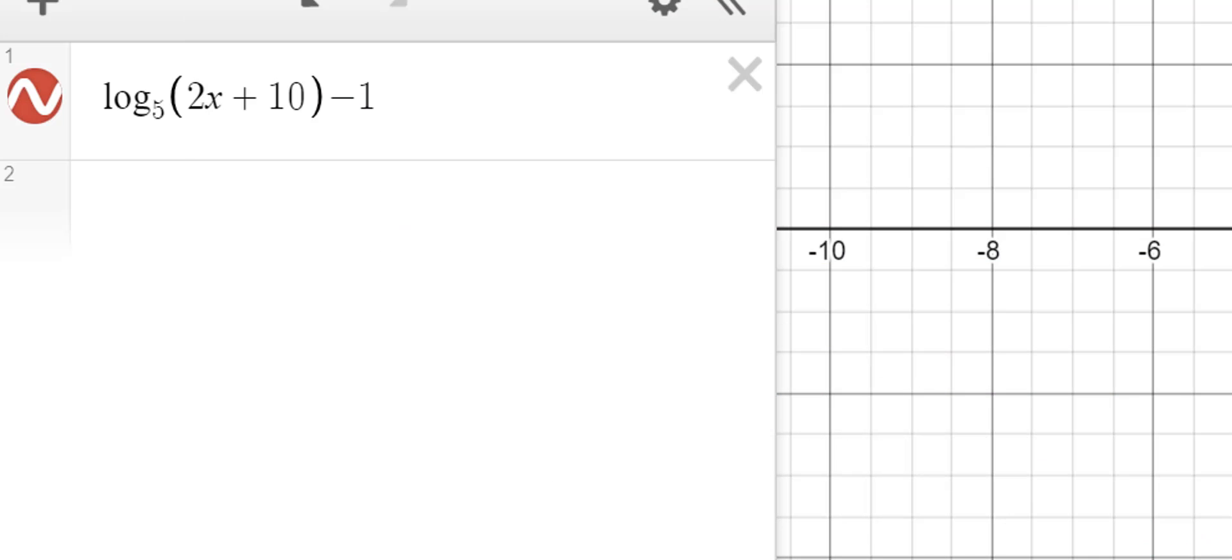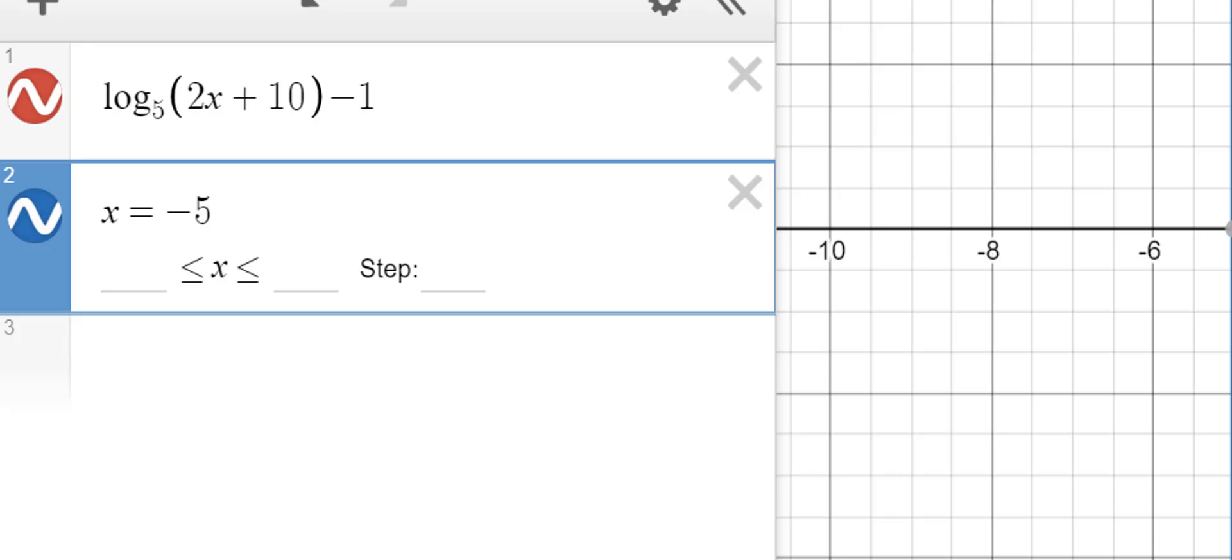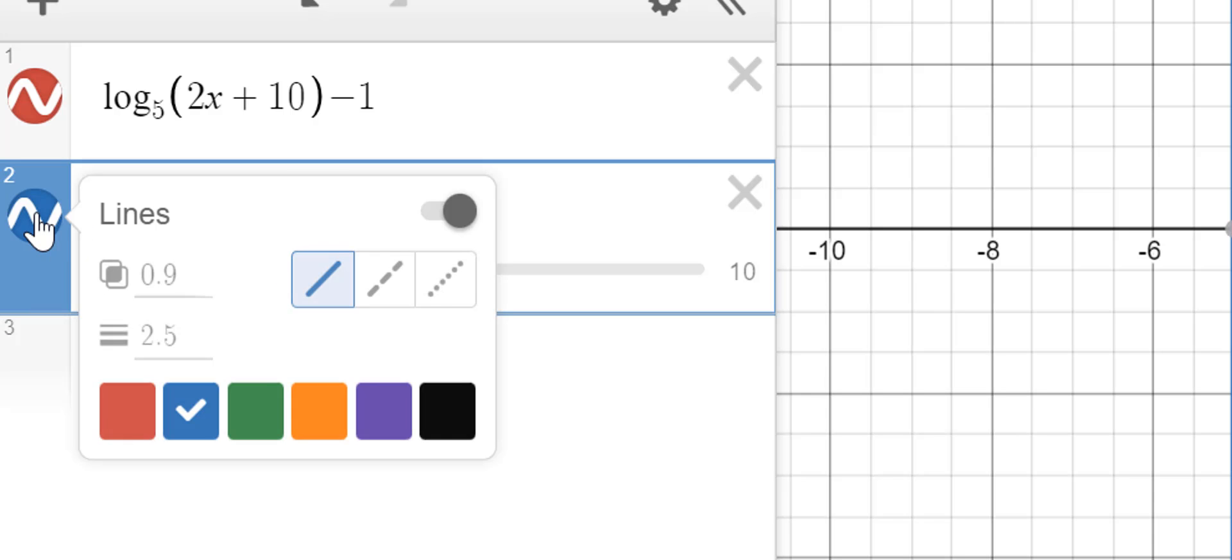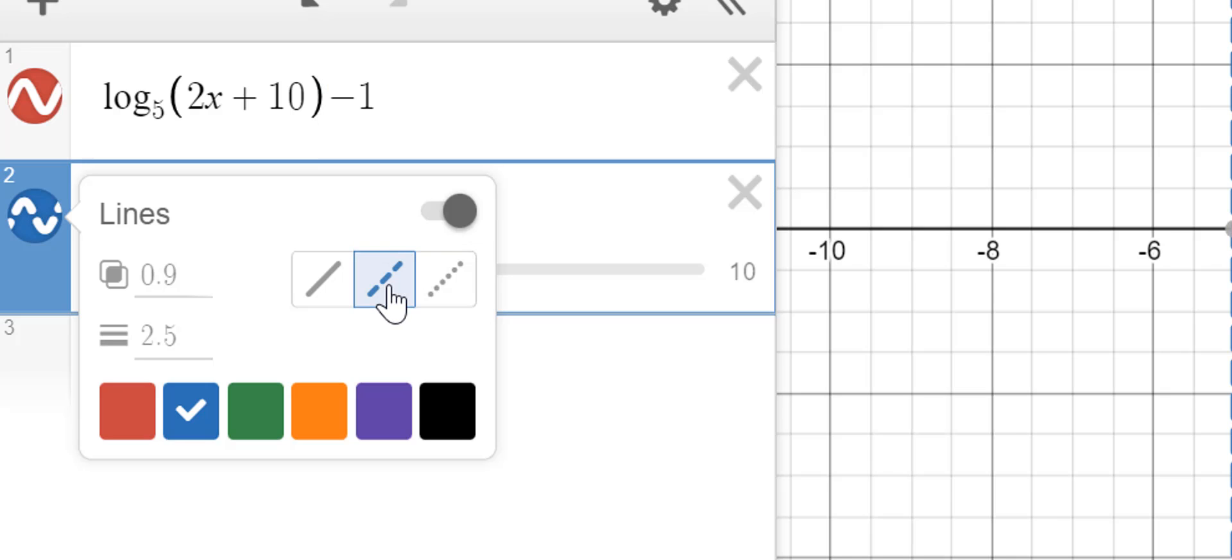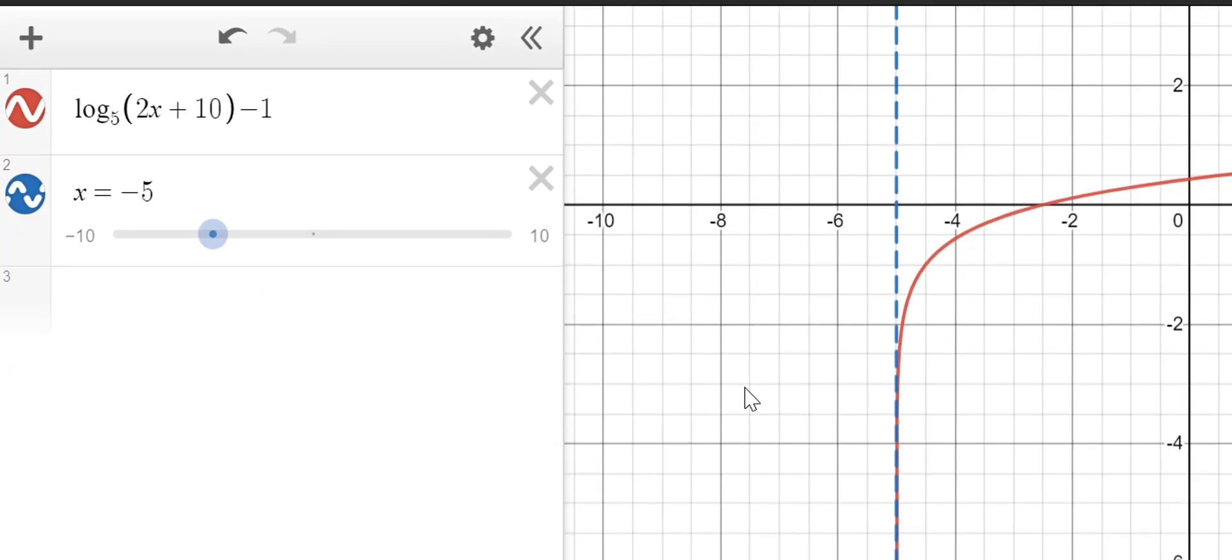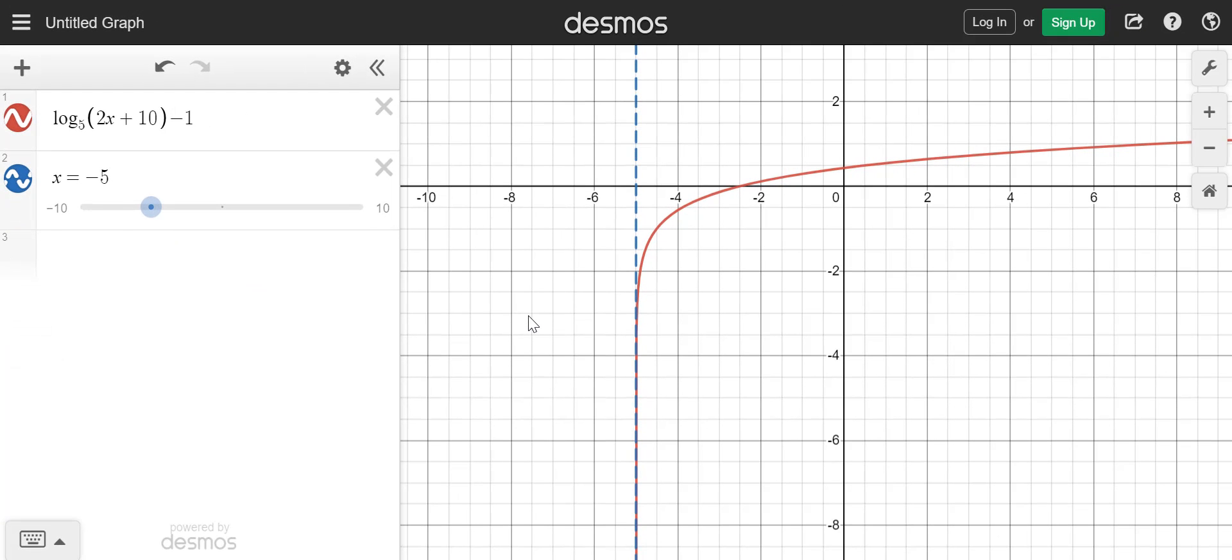So then what we want to do is put in x is equal to negative 5. And that's going to serve as our vertical asymptote. So we're going to go ahead and change that. You're going to click on the color that's there and then slide over here and click on the little dash line right there, because that is going to also help us verify that piece right there.